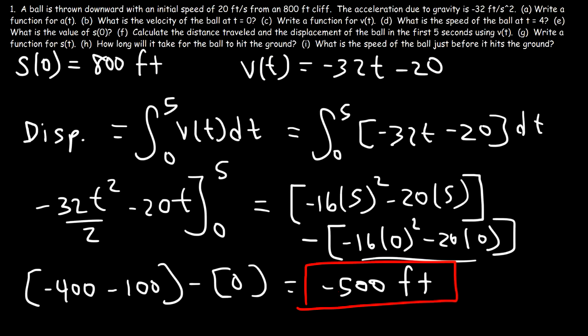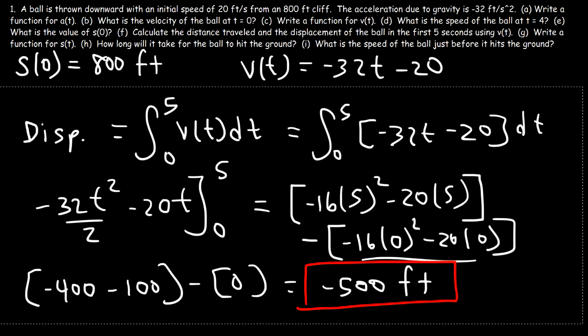So the displacement is negative 500 feet — the ball went down 500 feet in the first 5 seconds. The distance is positive 500 feet, but the displacement is negative 500 feet. Distance and displacement have the same magnitude since the ball doesn't change direction.